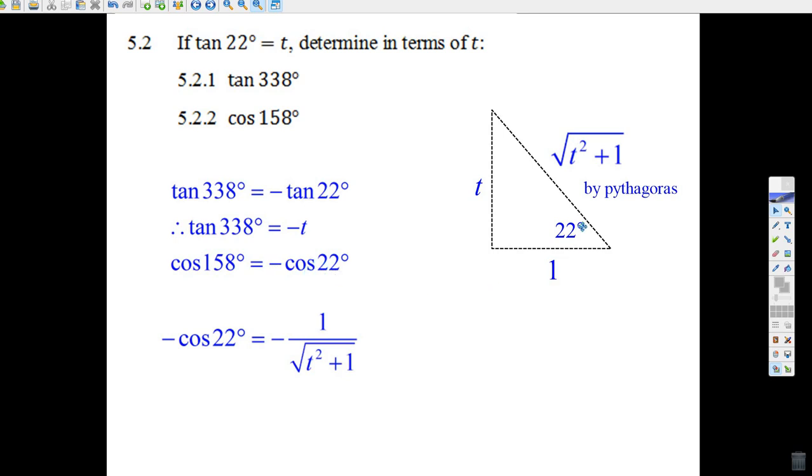Now I can't do this if I don't have a diagram. There are other ways of doing it, but the diagram makes it pretty easy. Because there's 22 degrees, the opposite side is t, and the adjacent side is 1.